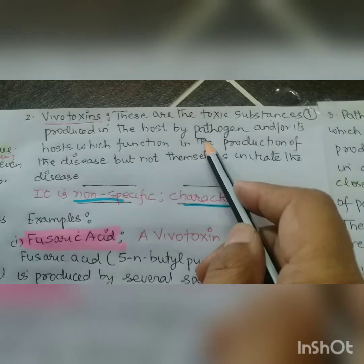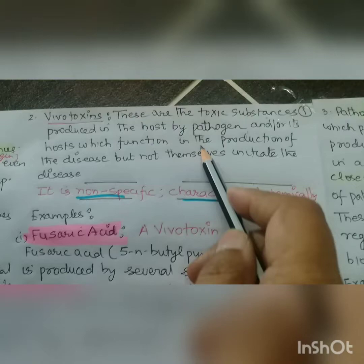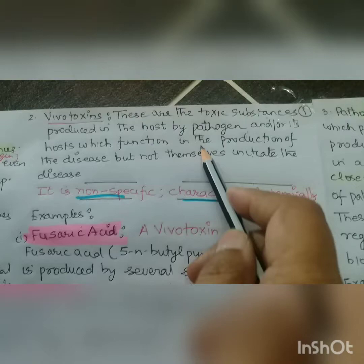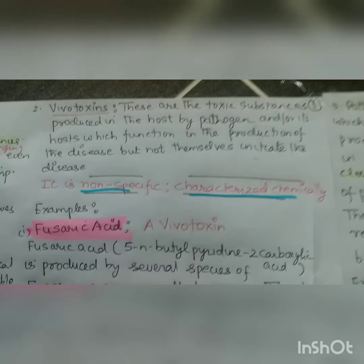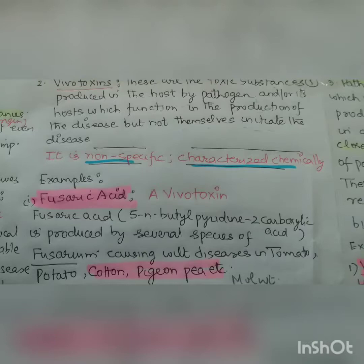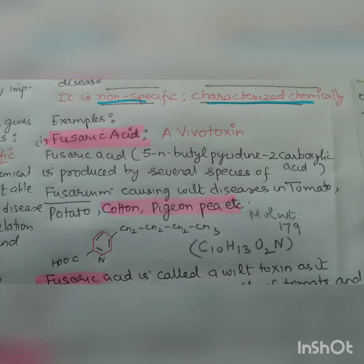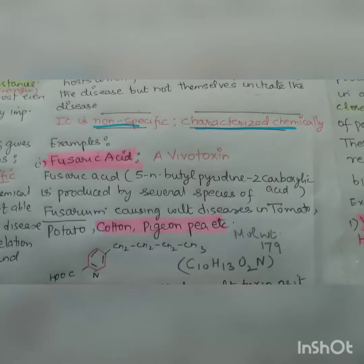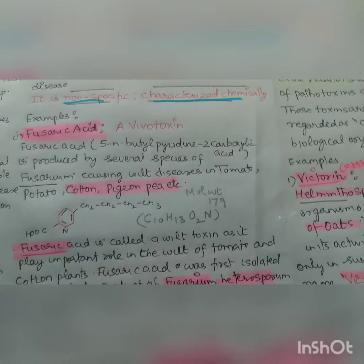Vivotoxins are toxic substances produced in the host by the pathogen and/or its host, which function in the production of disease but do not themselves initiate the disease. They are non-specific and are characterized chemically. Examples are fusaric acid and pericularin.